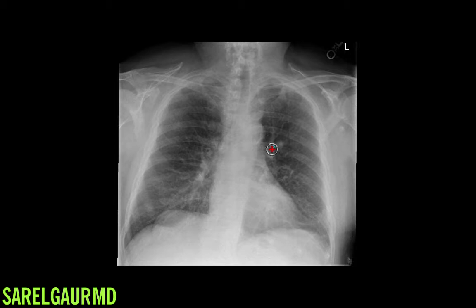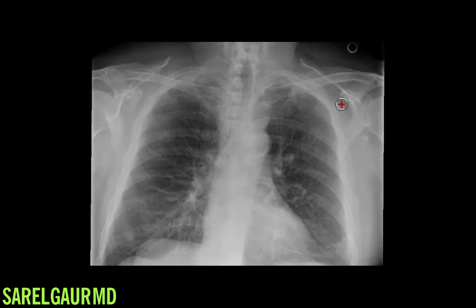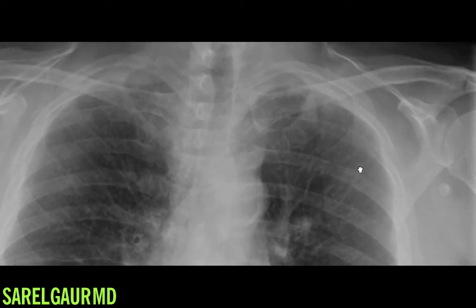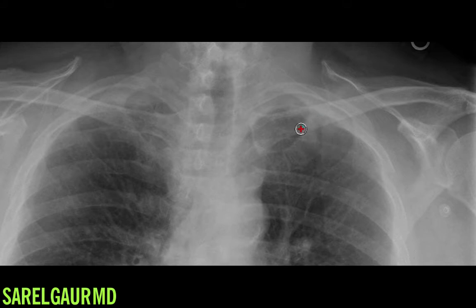Here is a chest x-ray of a 70-year-old patient referred for shortness of breath. The radiologist was quick to pick up this focal area of increased opacification in the left upper lobe, and this is concerning for a nodular mass. The next step is to recommend a non-contrast chest CT.